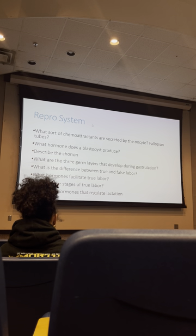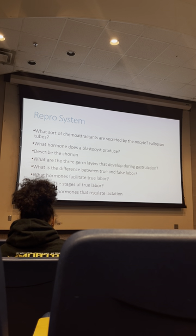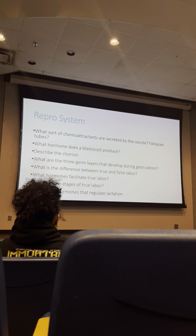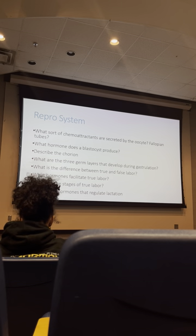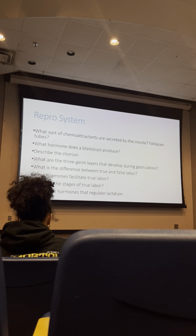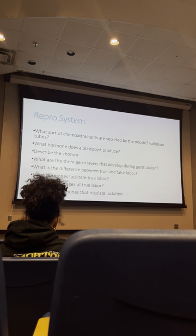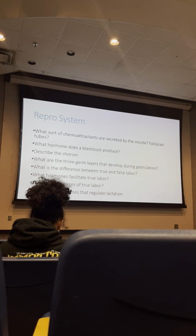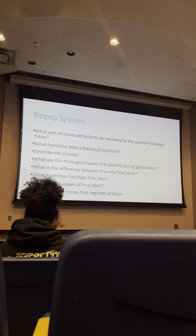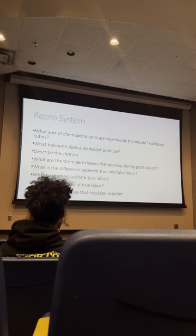For lactation: oxytocin is for milk ejection, prolactin is for milk production. A third hormone is also involved — dopamine must be downregulated because dopamine acts as prolactin-inhibiting hormone. Decreasing dopamine allows prolactin to be produced. This creates a positive feedback loop: baby sucking at the nipple activates mechanosensors that tell the hypothalamus to secrete those hormones and downregulate dopamine.